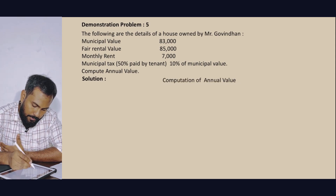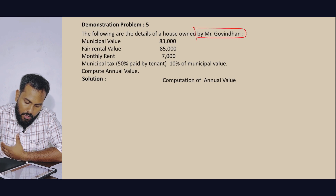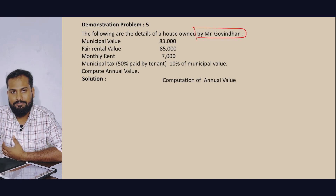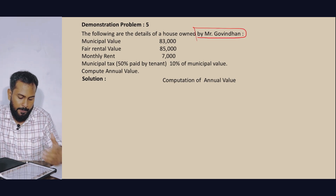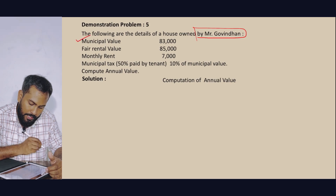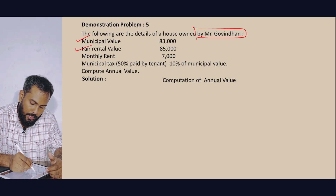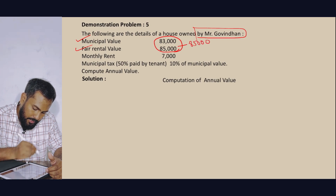Next computation: The following are the details of a house owned by Mr. Govind. Municipal Value is 83,000 and Fair Rental Value is 85,000. Whichever is higher is 85,000.